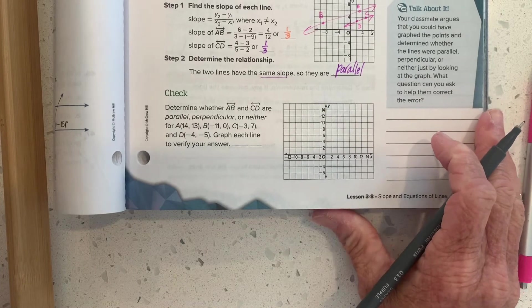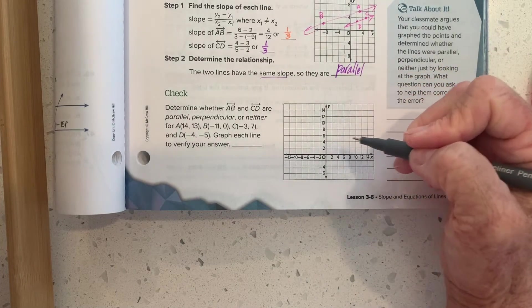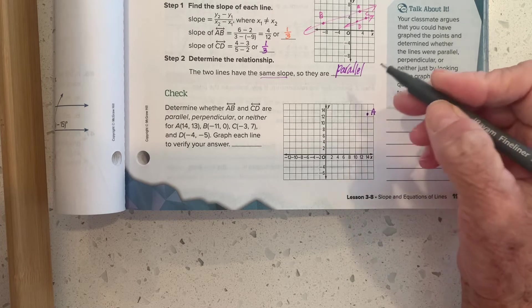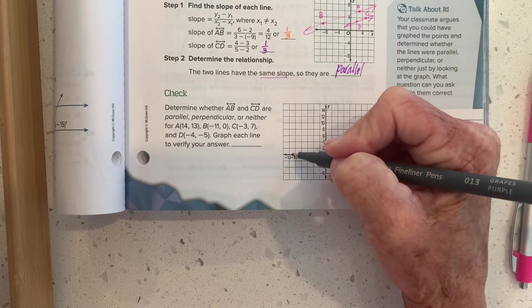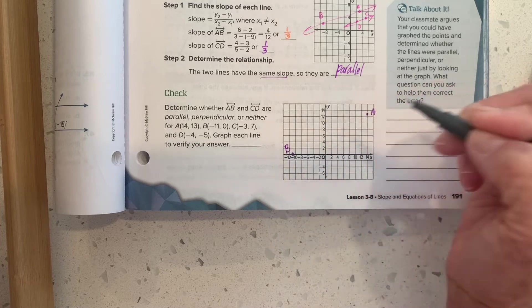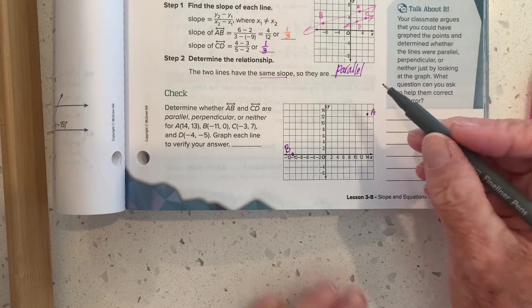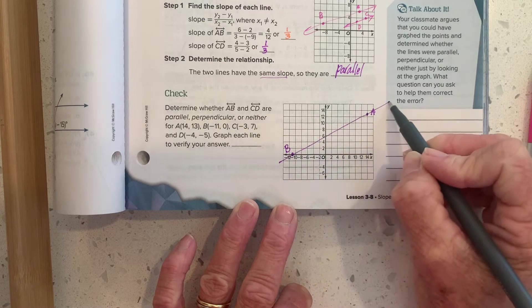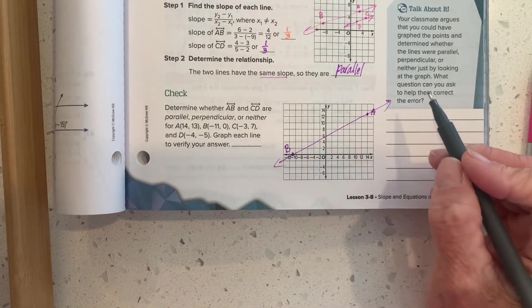So what about AB and CD? A is at 14, 13. B is at negative 11, zero. And I don't have a straight edge. That's the problem here. So I'm just eyeballing it. There's AB.